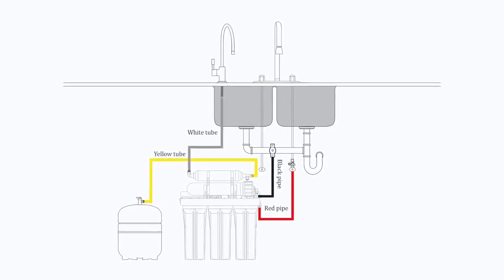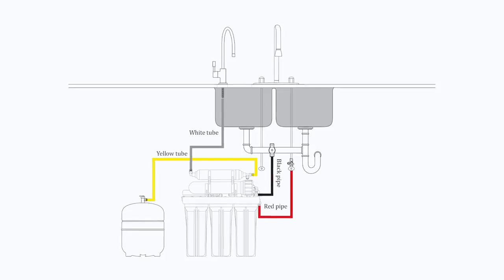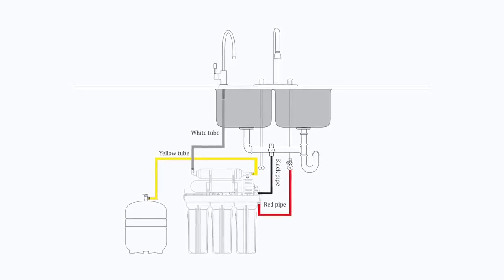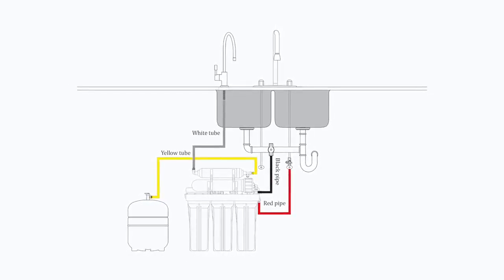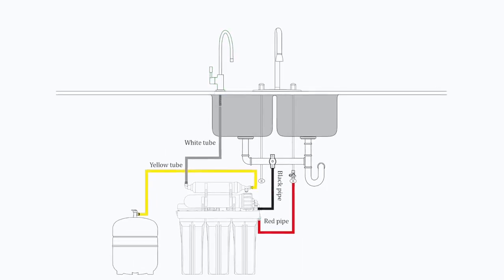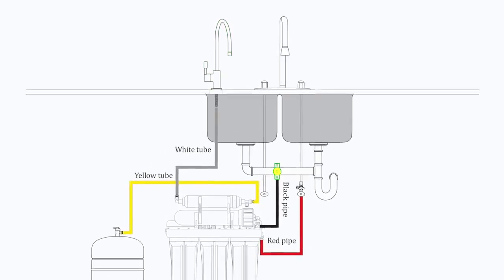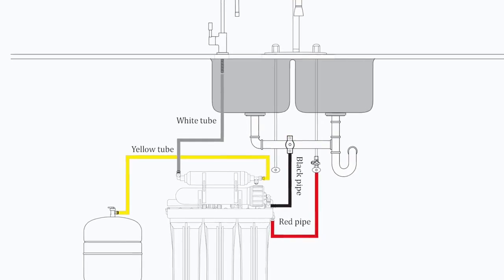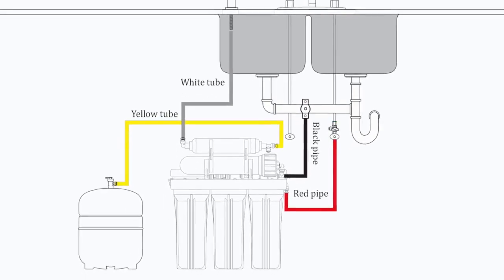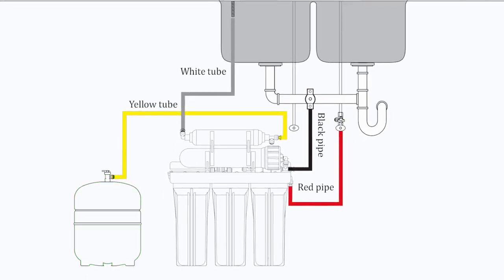To install the whole system, you will have to follow all the steps below. First, we are going to talk about Quick Connect Plumbing Fitting, then we will help you prepare your RO faucet, wastewater saddle valve, feed water adapter valve, and water pressure tank.